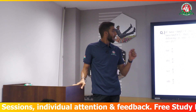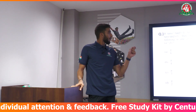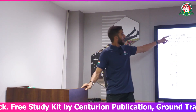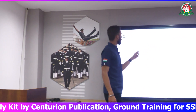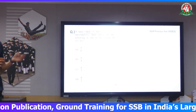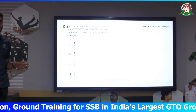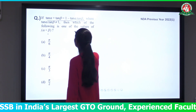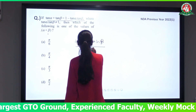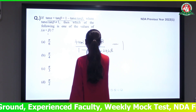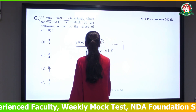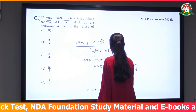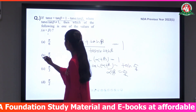Question: if tan α + tan β = 1 minus tan α into tan β, where tan α + tan β does not equal 1, then which of the following is one of the values of α + β? Using the tan addition formula: (tan α + tan β)/(1 - tan α·tan β) = 1, which equals tan(π/4). On comparison, α + β = π/4. That is option B.